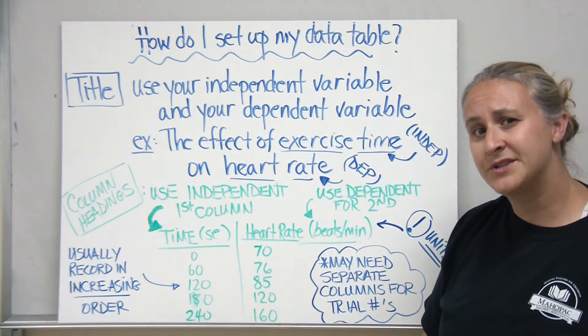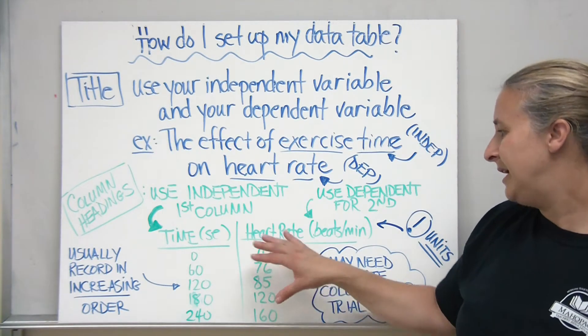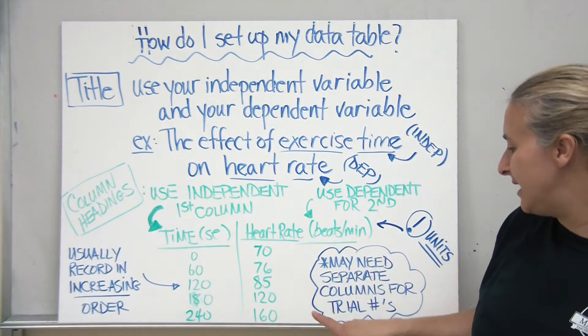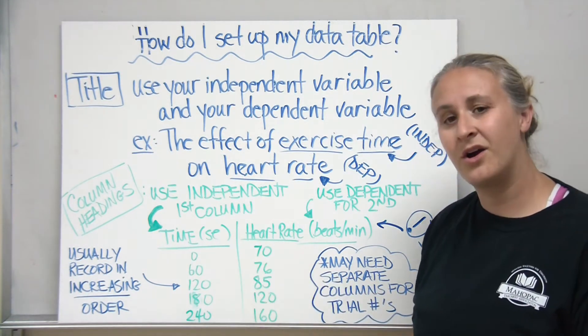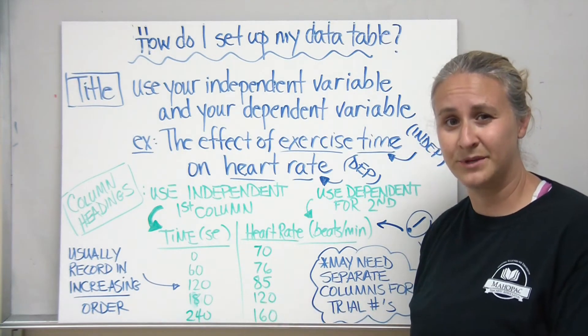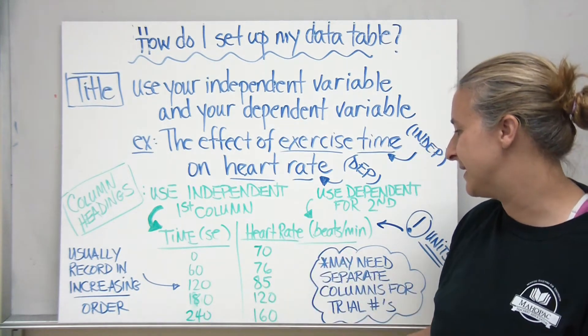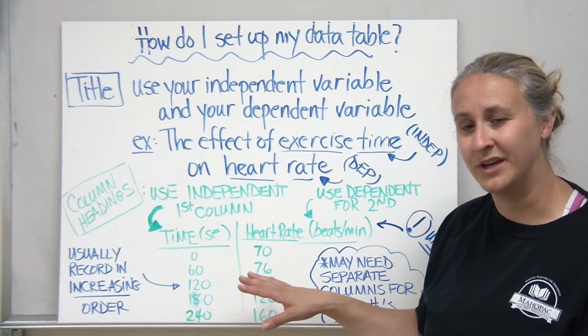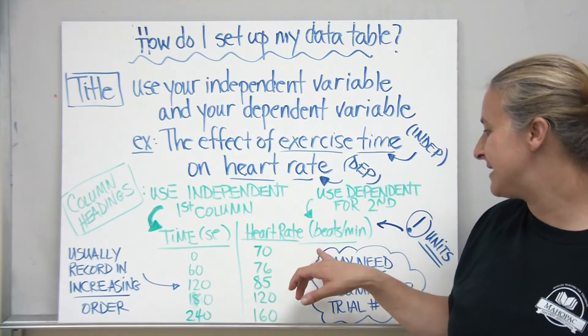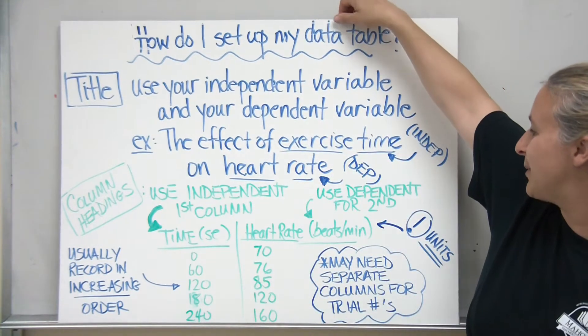My dependent variable is going to be the second column and you may have extra columns depending on the number of trials that you run. So in this case my heart rate, I have it filled in pretending that I've already done my experiment just to give you some examples. Another thing to remember is that you need to include your units. In this case my time in seconds and my heart rate in beats per minute.